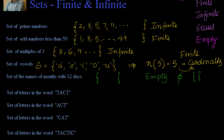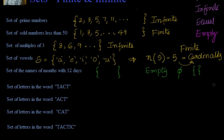Another example of an empty set is the set of even prime numbers greater than 2 — since the only even prime is 2, there are no such numbers, making it an empty set or phi. Remember: empty set is not equal to {0}. The set {0} has one element — the element 0 — so it is not the same as an empty set.